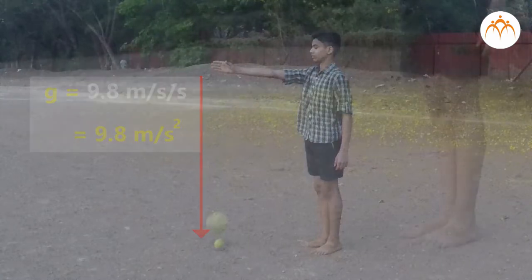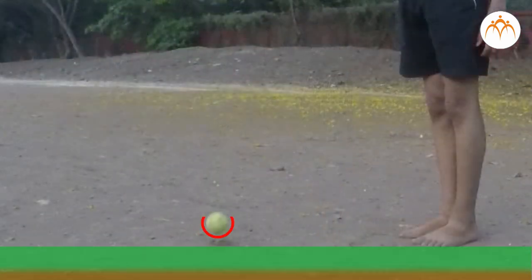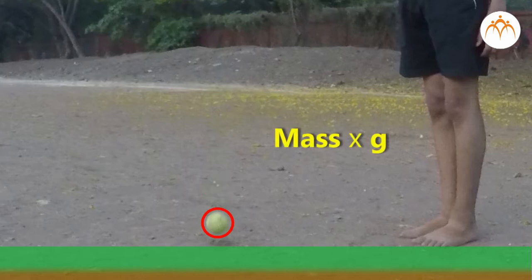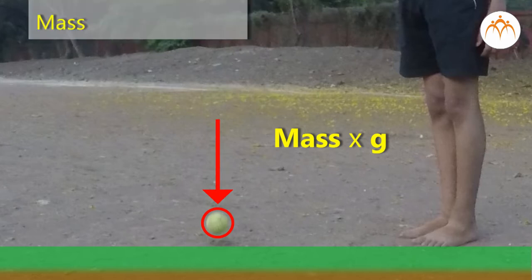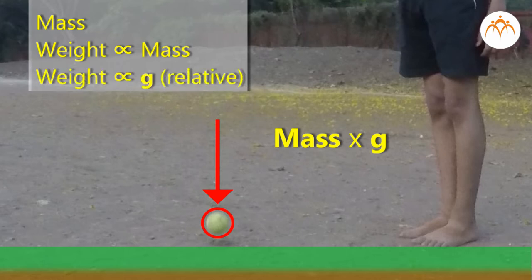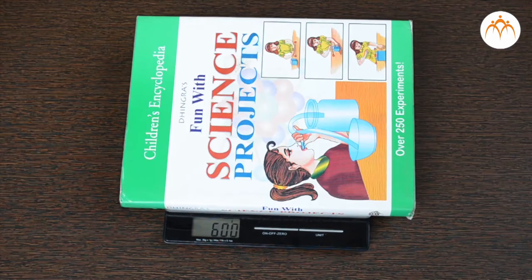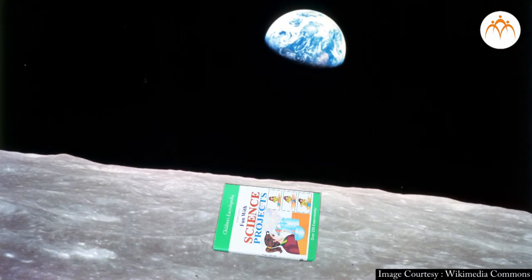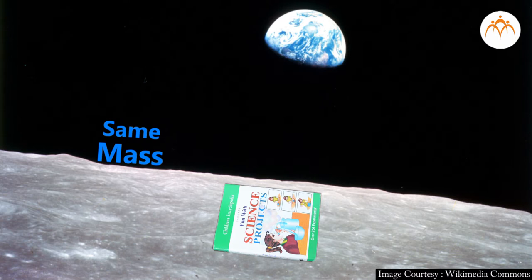Near Earth's surface, an object's weight is approximately mass multiplied by gravitational force, and it points downwards. An object's mass does not depend on gravity. An object's weight is proportional to mass, but it depends on which planet you are on — it is proportional to the strength of the local gravitational field. If we take this book to the moon, it will still have a mass of 6 kg.